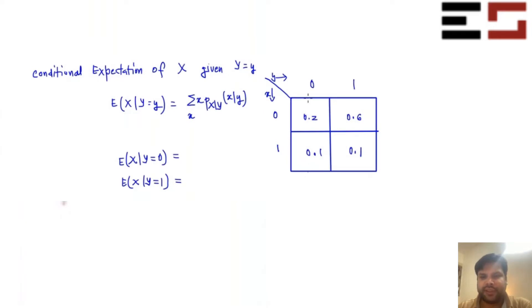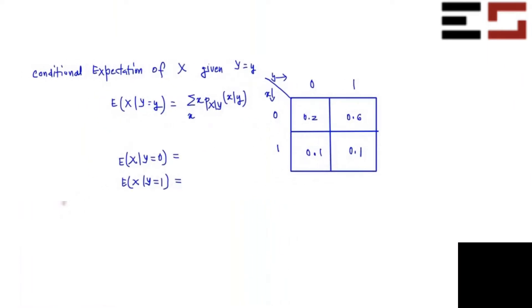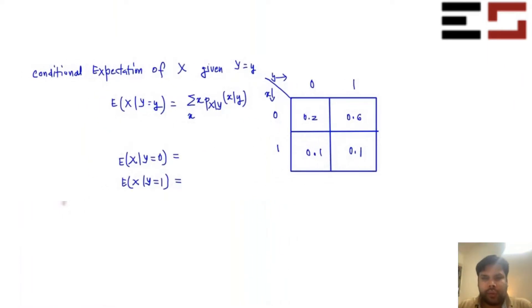So when Y is 0 means this is the problem, right? Y is 0. And Y is 1 means this is the problem. Are you done? What is this? Is it 1 by 3? Yes, it is. What about this? 1 by 7. Very good. Is that fine, everybody?